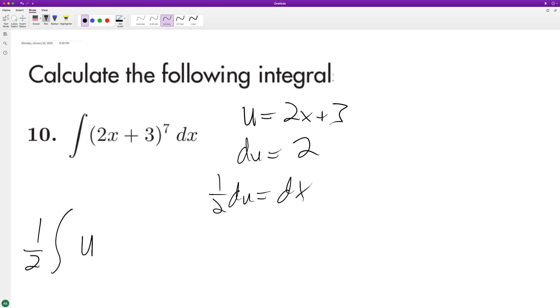We'll use our u raised to the seventh du. So we'll go ahead and substitute: one-half u raised to the seventh. Add one to the exponent, seven plus one, and divide by the new exponent, giving us one over 16 u raised to the eighth plus c.